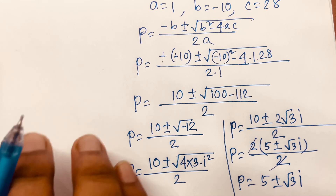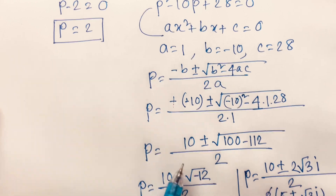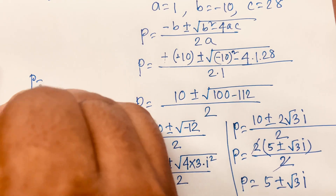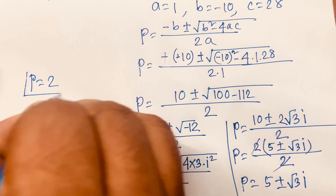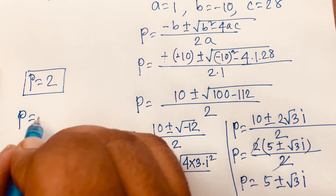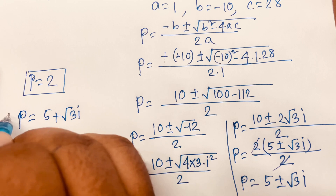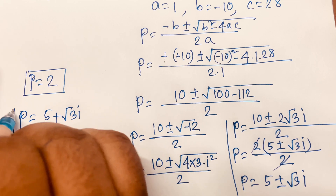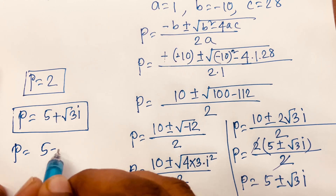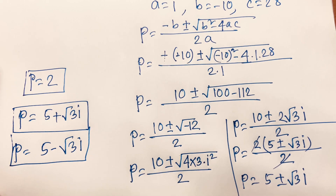So our final answers are: p equals 2, p equals 5 plus square root 3 i, and p equals 5 minus square root 3 i.